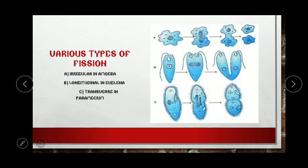Now, various types of fission. There is irregular binary fission in Amoeba — because Amoeba has no specific shape, the division is irregular. Then longitudinal binary fission in Euglena — the plane of division is longitudinal to the organism, producing two offspring. Then transverse binary fission in Paramecium — the plane of division is transverse. Try to remember these examples.